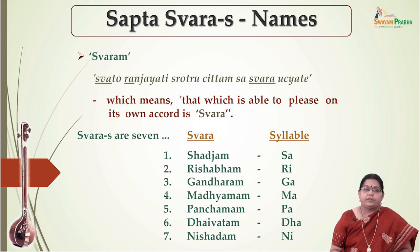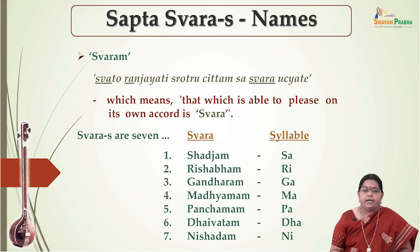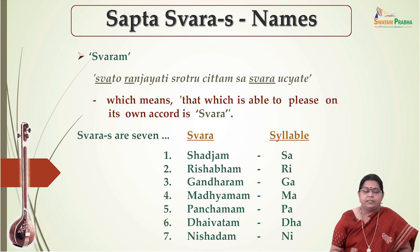We have seven Swaras called the Sapta Swaras, which are Sajjam, Rishabham, Gandharam, Madhyamam, Panchamam, Daivatam and Nishadam. We use short syllables to sing these Swaras and they are respectively Sa, Ri, Ga, Ma, Pa, Da and Ni.